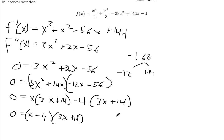Okay, so the potential inflection points are x equals 4. When we set this equal to 0, and then this is going to be negative 14 over 3.